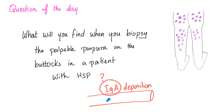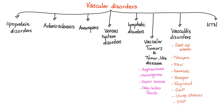Vascular disorders are divided into lipoprotein disorders, arteriosclerosis (which includes atherosclerosis), aneurysm, venous system disorders, lymphatic disorders, vascular tumors and tumor-like diseases such as Kaposi's sarcoma, angiosarcoma, etc. And remember Osler-Weber-Rondo, which we talked about in the previous video. Also in this category: vasculitis disorders.